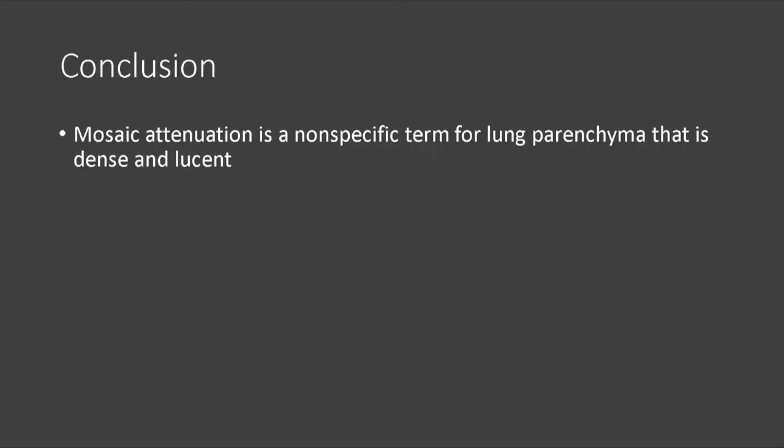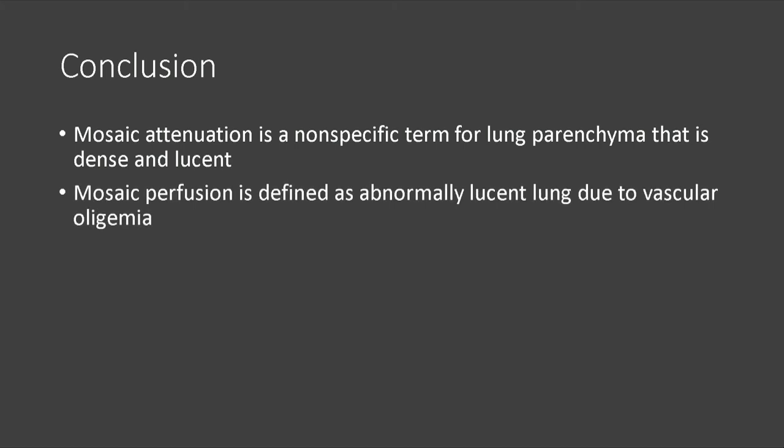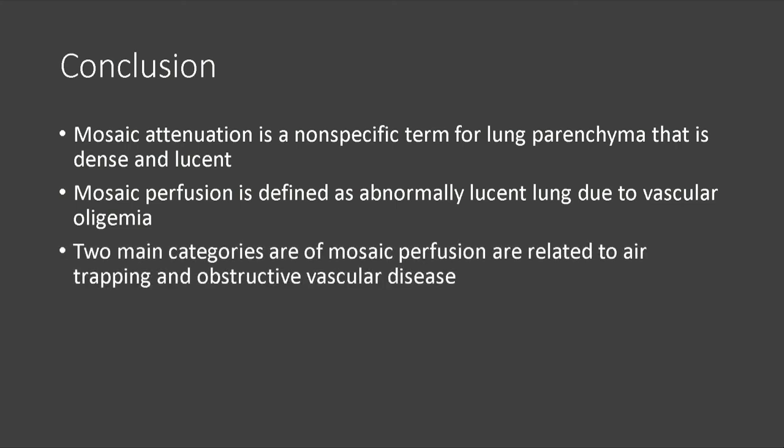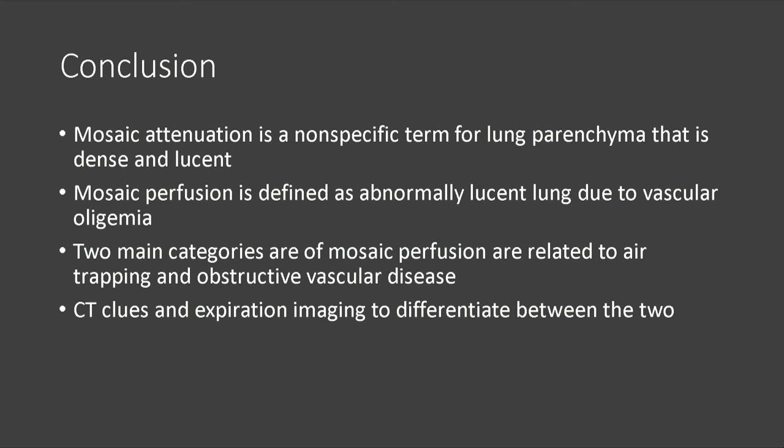In conclusion, mosaic attenuation is a general term for lung parenchyma that is both dense and lucent, and does not imply which portion is abnormal. Mosaic perfusion is defined as abnormally lucent lung due to vascular oligemia, which can be caused by air trapping or obstructive vascular disease. We can use CT clues — appearance of airways and pulmonary arteries, as well as expiration imaging — to differentiate between these two main categories.